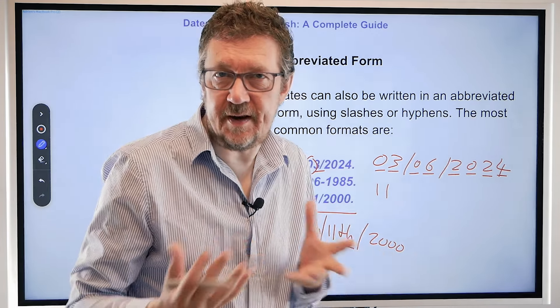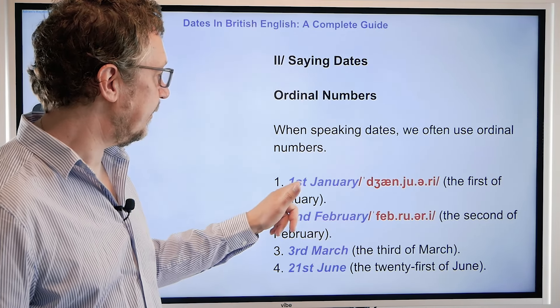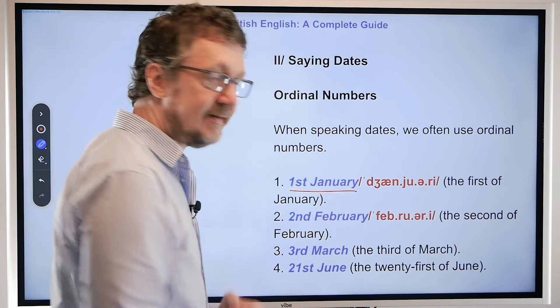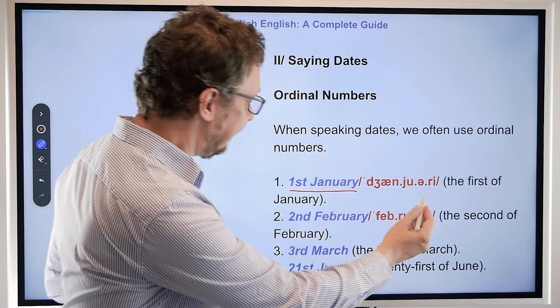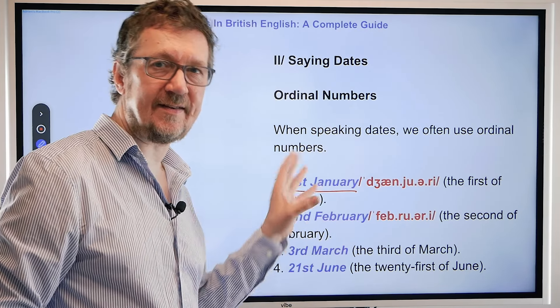So, saying dates. When we say dates and when we speak them, we use ordinal numbers, so like 1st, 2nd, 3rd, 4th. For example, we write like this as I mentioned before, but we say 'the 1st of January'. You write like this, you say 'the 1st'. And for example the next one: 2nd of February — we say 'the 2nd of February' when we say it. But we write it with ordinal numbers like this.